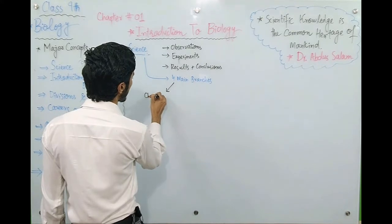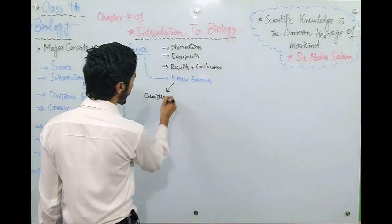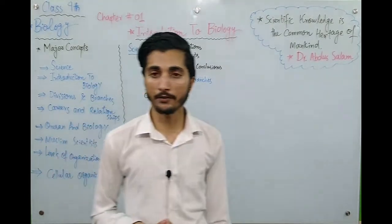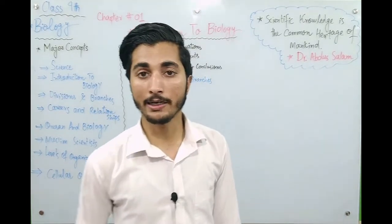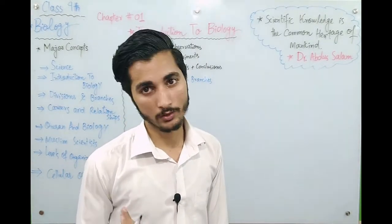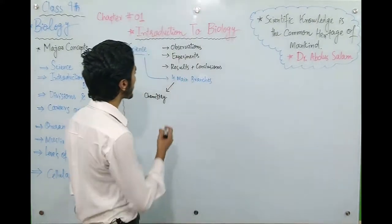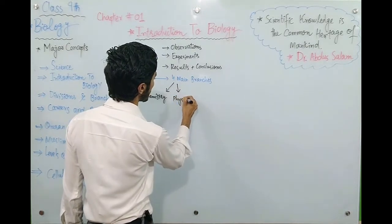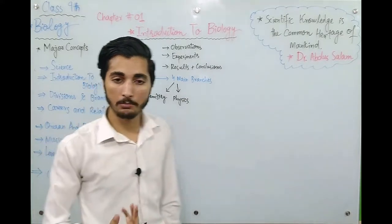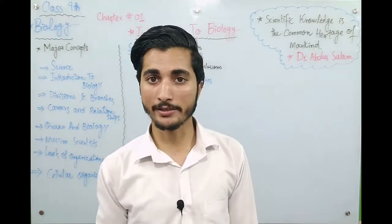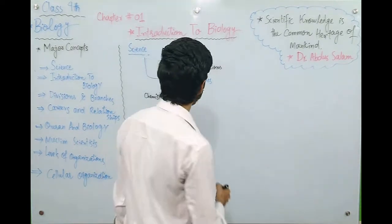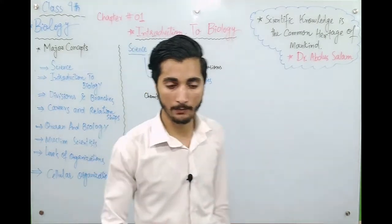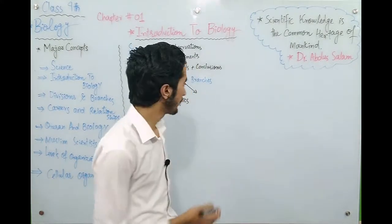The first number is chemistry. The second number is physics — science. The third number, which is the main and important branch that we are studying, is biology. These are the main branches of science.